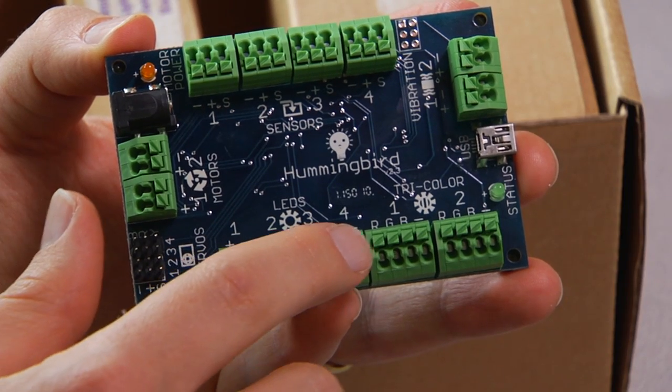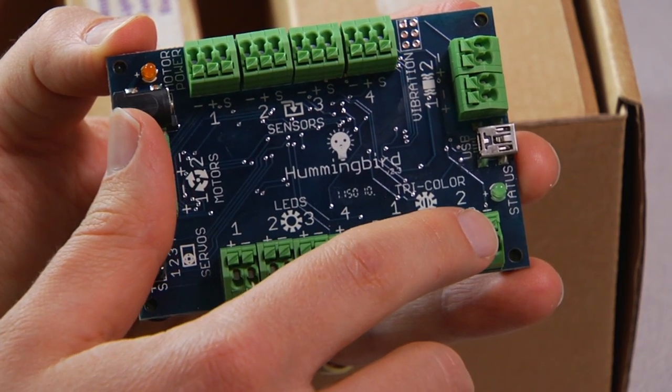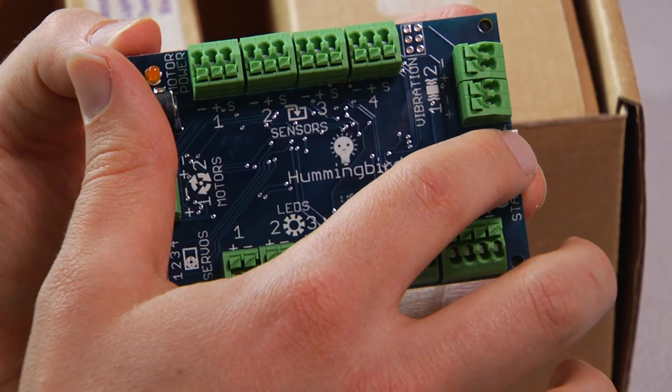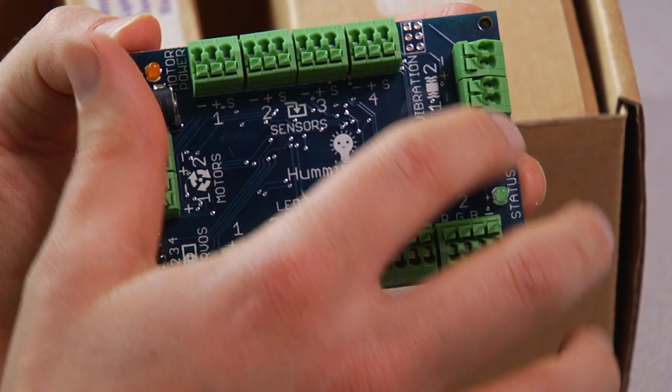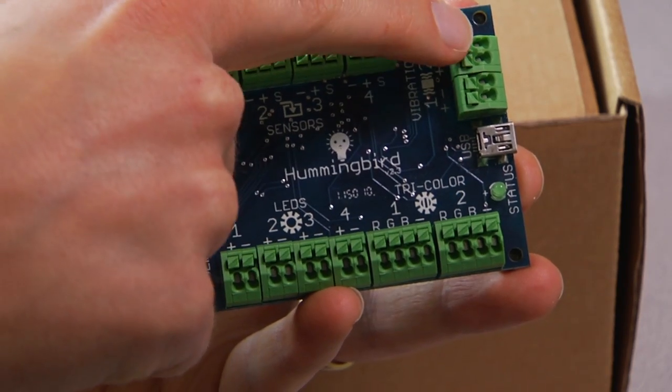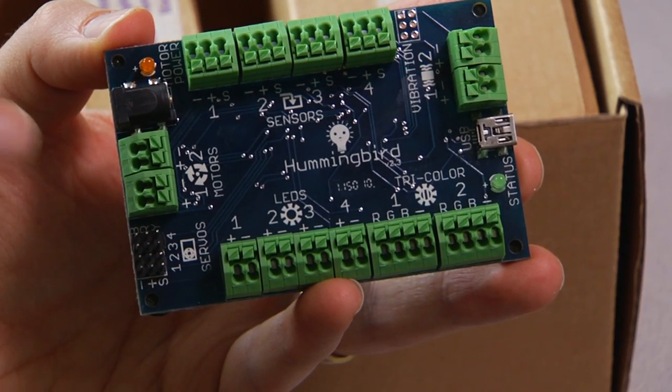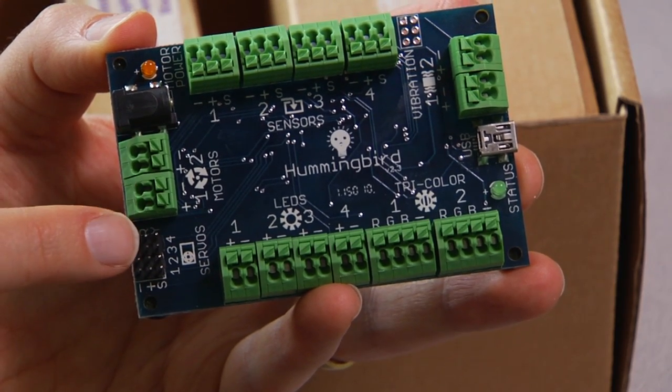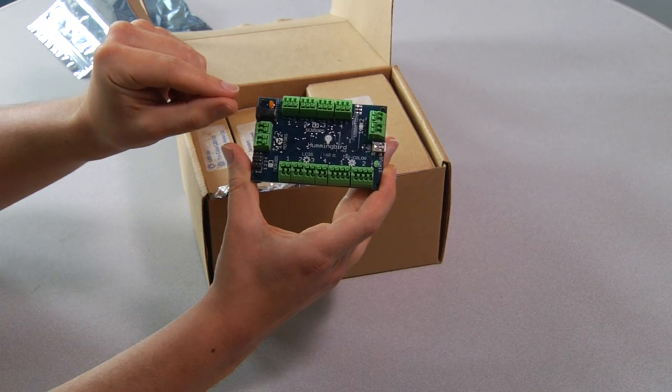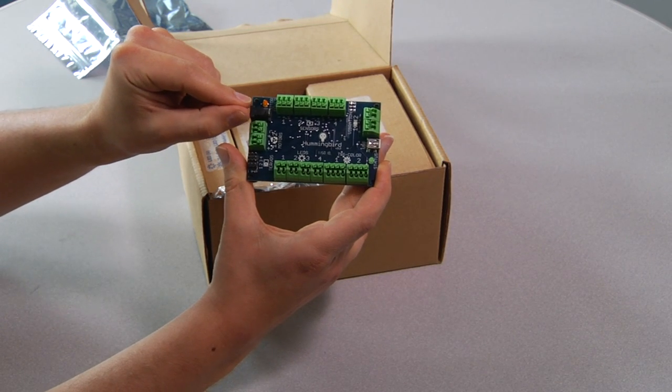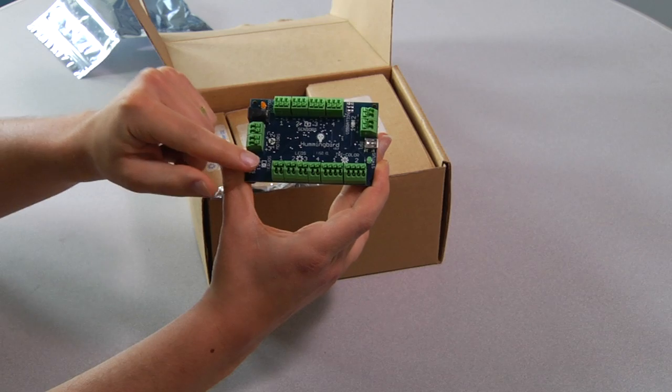It has four regular LED ports, two tri-color LED ports, a USB connector, a status LED, two vibration motor connectors, four sensor connectors, two motor connectors, four servo connectors or ports, and then also a jack for power for motor and servo power.